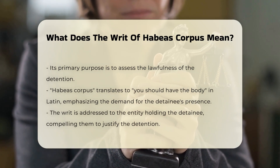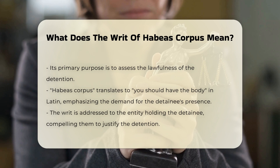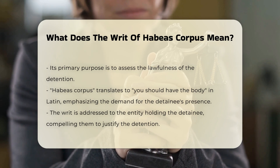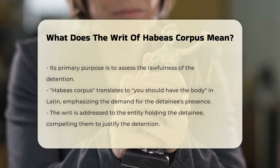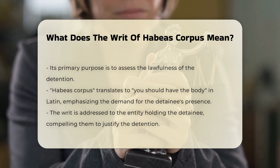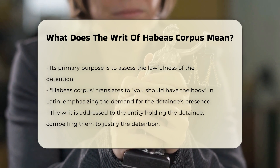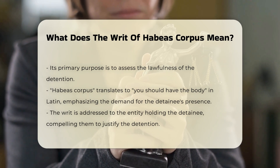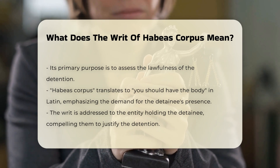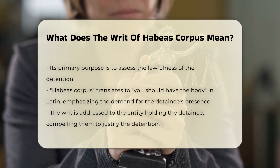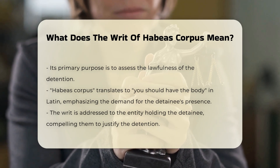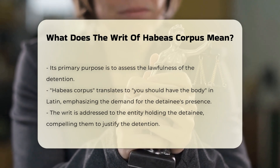When a writ of habeas corpus is issued, it is addressed to the person or entity holding the detainee in custody, requiring them to present the detainee and justify the reason for the detention. This process ensures that the court can assess whether the custodian has the lawful authority to detain the individual.